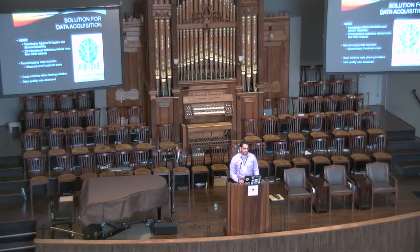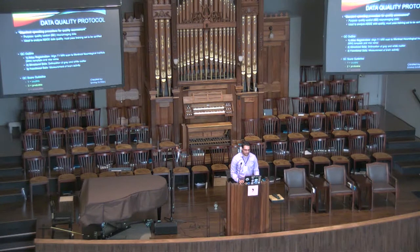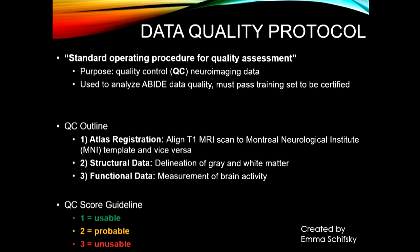Before we can use this data for analysis, we had to go through a quality assessment protocol developed by the lab. This quality assessment protocol is called the Standard Operating Procedure for Quality Assessment. It was created by Emma Schieffsky and the rest of the community team at the Deakin Lab. The purpose is to quality control — also known as QC — neuroimaging data. This is used to analyze the ABIDE datasets, because we want to make sure that the dataset is usable for analysis. Before you can become research-reliable, you must take a training set, pass it, and you've got to have an 80% success rate before you can be considered certified.